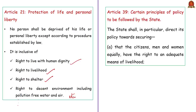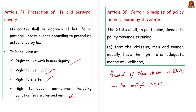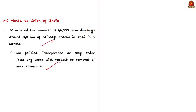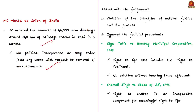The Supreme Court ordered the removal of 48,000 slum dwellings around 140 kilometres of railway tracks in Delhi within three months. Most importantly, the Supreme Court said there shall be no political interference or stay order from any court with respect to the removal of these encroachments. According to the author, this Supreme Court judgment is flawed and violates three important principles: the principles of natural justice, judicial precedence on the right to shelter, and state policies governing evictions.